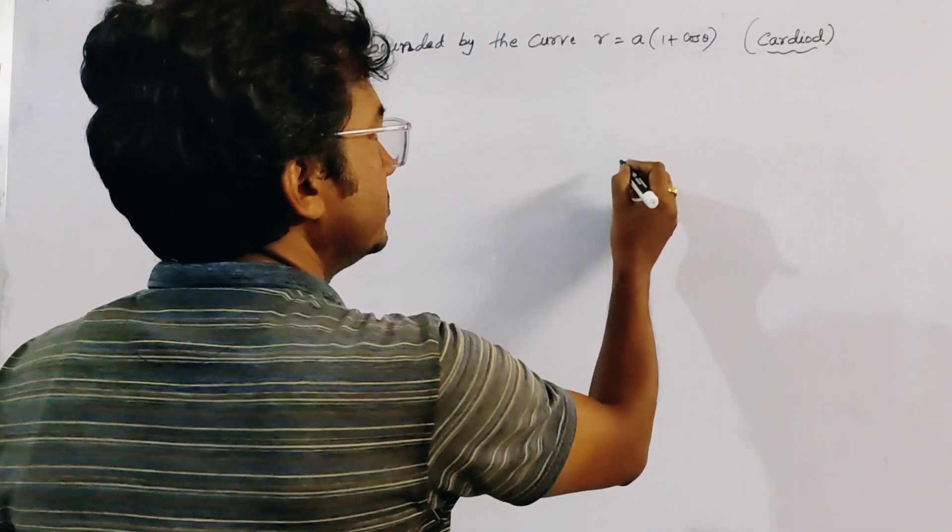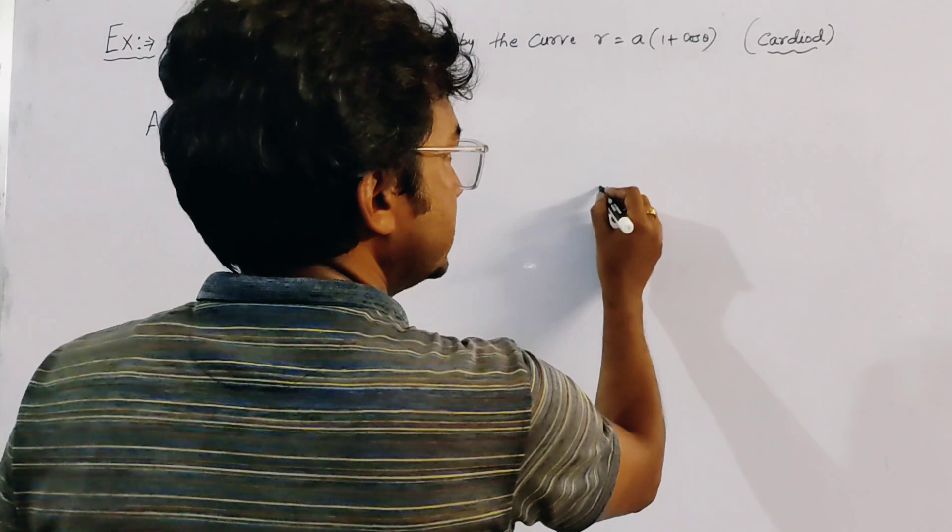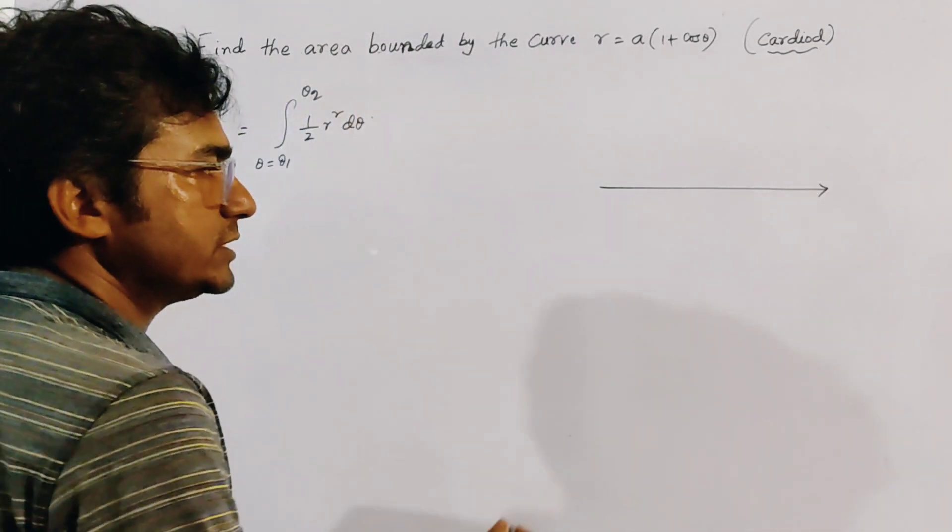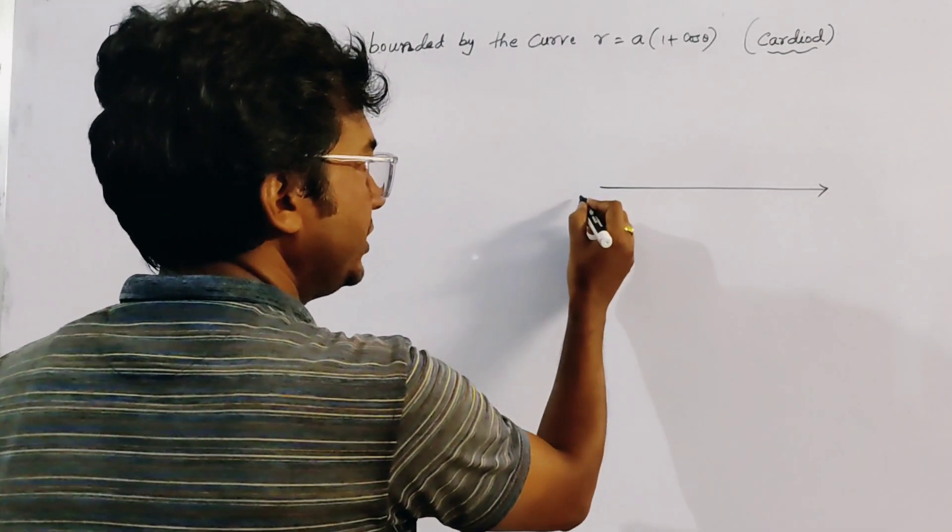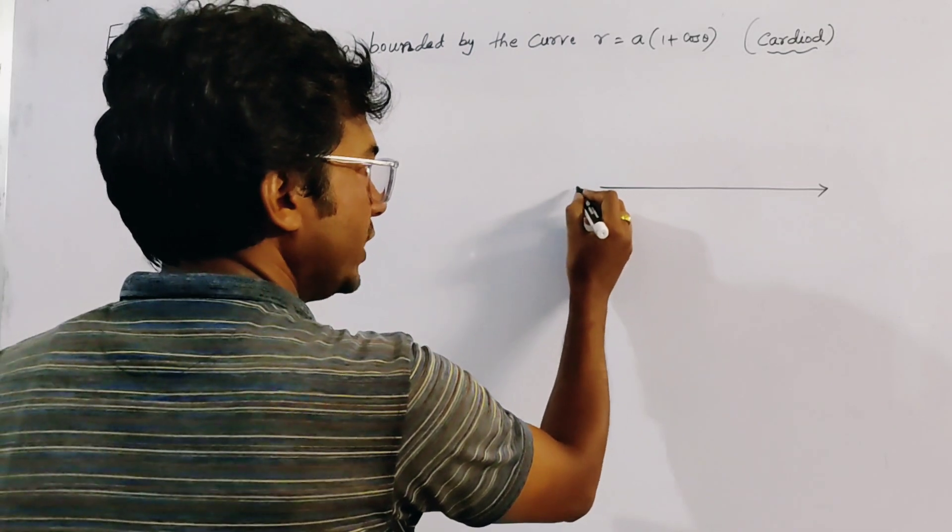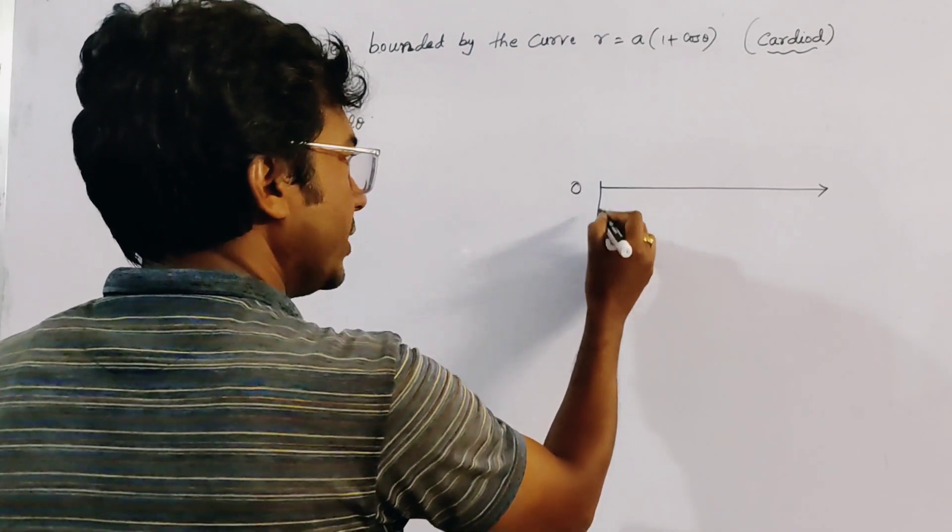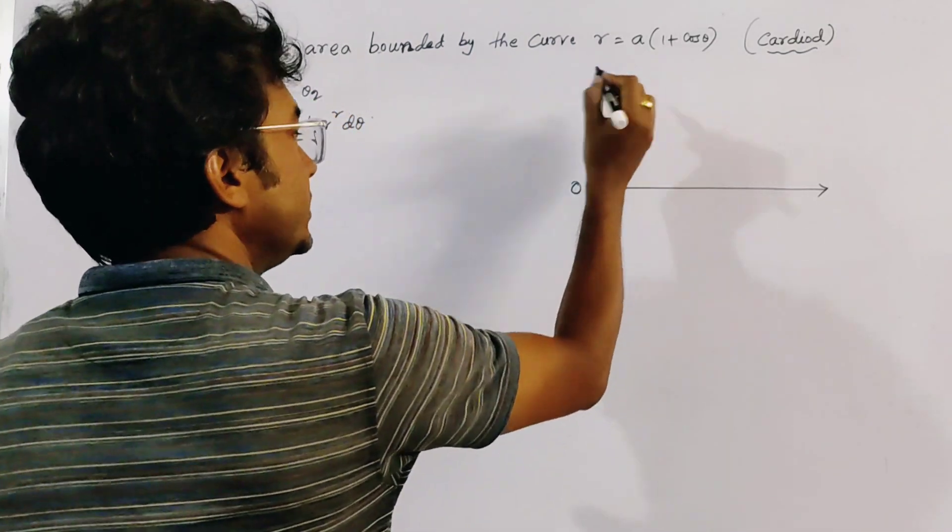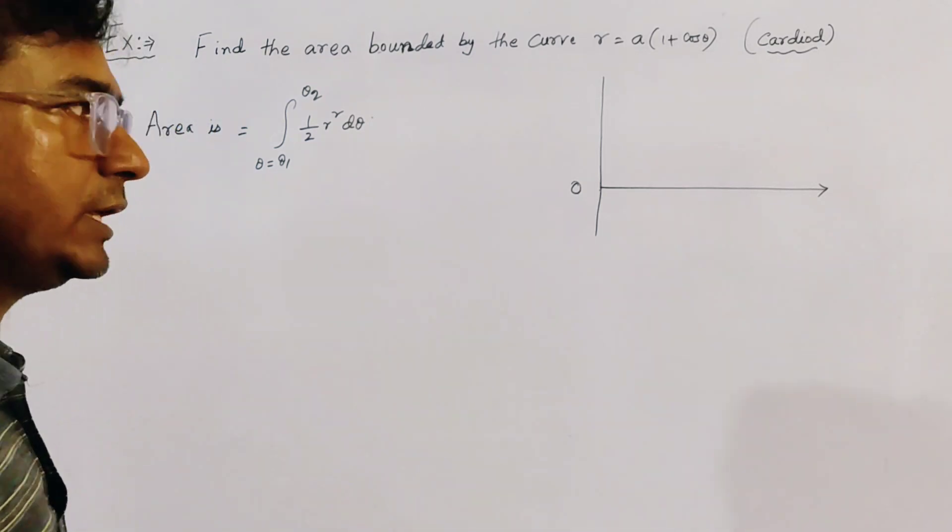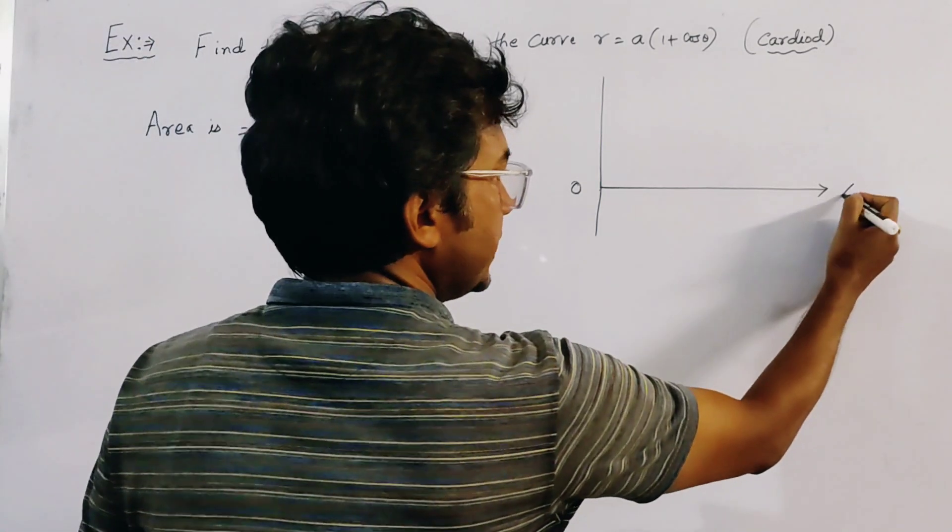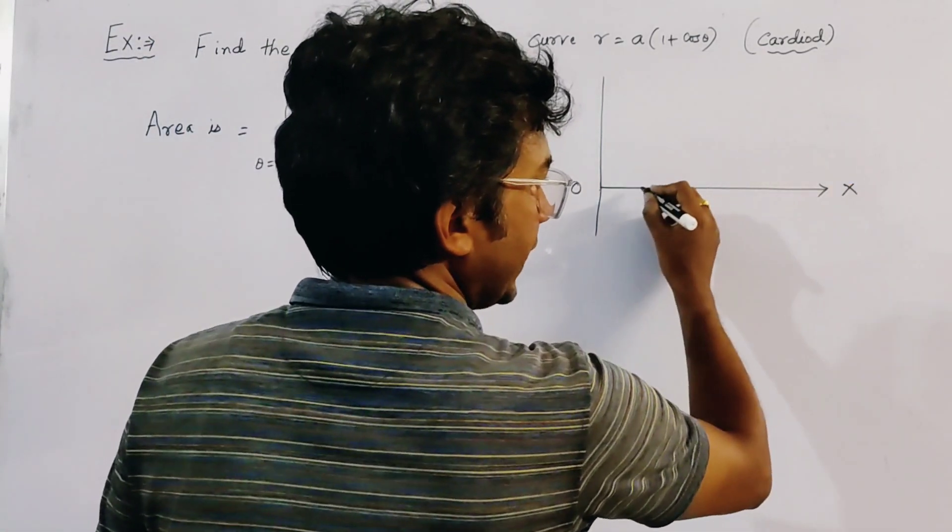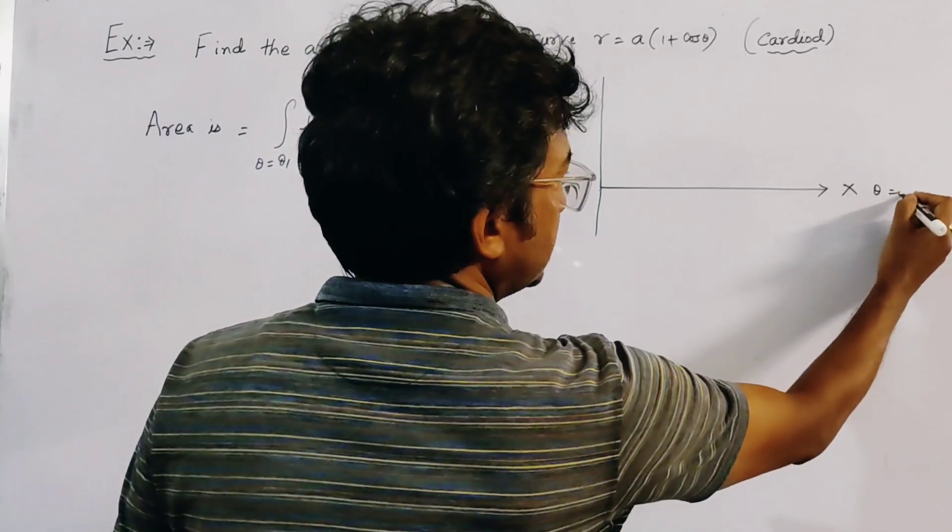Here we try to sketch the rough figure of the cardioid. This is the initial line, let it be O, and we draw a perpendicular line to the initial line from O. Since this is the initial line, along this line theta is equal to 0.